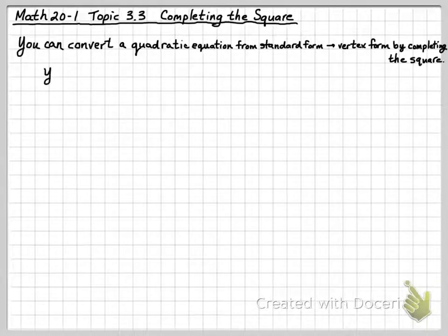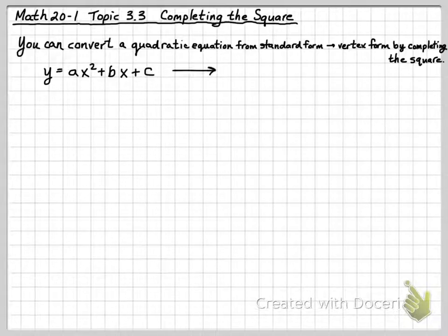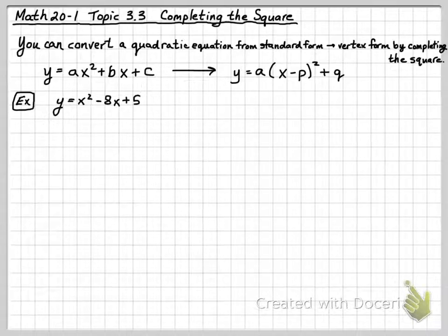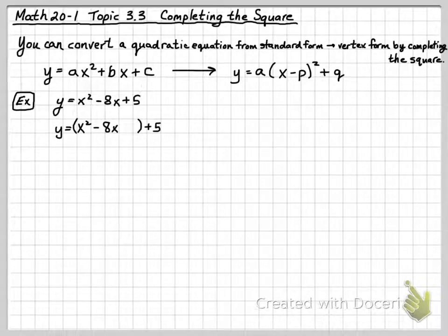Here's what we do. When you take y equals ax squared plus bx plus c, that's a quadratic equation in standard form, we can put it into y equals a times x minus p squared plus q by just rearranging it. For example, let's look at y equals x squared minus 8x plus 5. We're going to put brackets around the first two terms and leave the 5 on the outside, leaving room to complete the square.